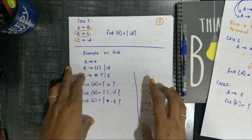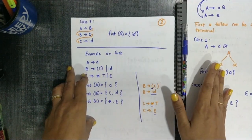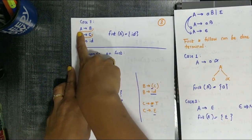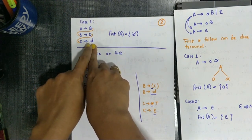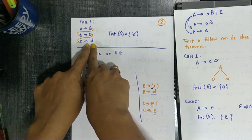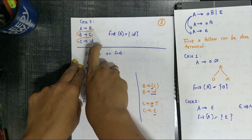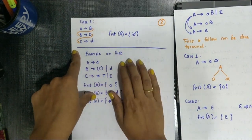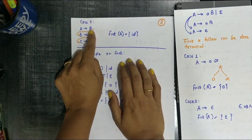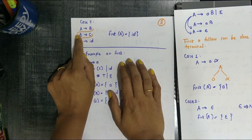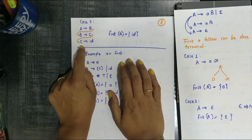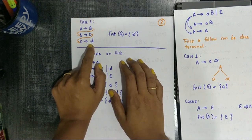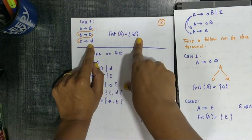Case 3: A tends to B, B tends to C, and C tends to id — where id is an identifier, a terminal symbol. So First(A): is there any terminal symbol directly? No. Then what does B tend to? C — again not a terminal. So we go deeper, find C, and C tends to id. Therefore, First(A) = {id}. We keep searching until we reach a terminal symbol.